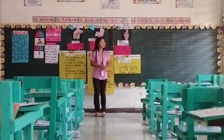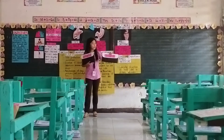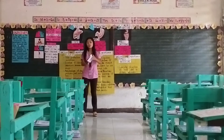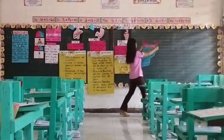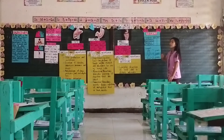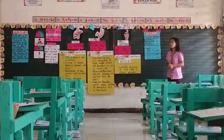In every row, I want you to choose your leader, secretary, and one representative as your reporter. In every group, I will give you an envelope. Inside the envelope are your materials and activities. I will give you 10 minutes to answer your activity. But before that, you need to consider these rubrics: criteria — correctness, participation, uniqueness, and presentation. Legend: star shape for 5 points, heart shape for 4 points, and smiley face for 2 points. Be guided by these rubrics in your activity.